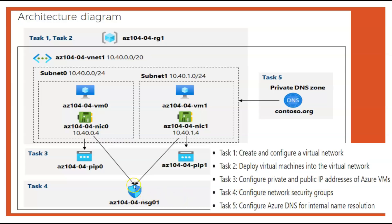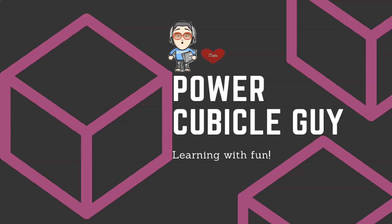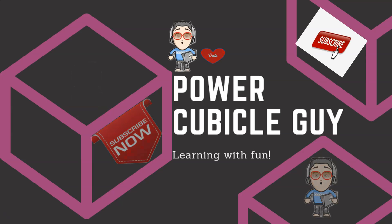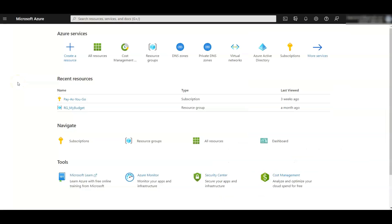Task four is to configure NSG — network security groups — which will secure the network, and we will see that more in the video. Task five is to configure Azure DNS. This is one of the labs of the Azure Administrator, also present on the Microsoft Learning website, and this is just the video version of it.